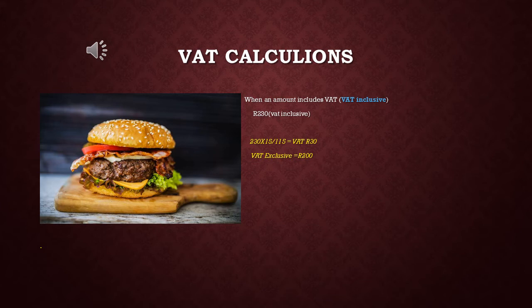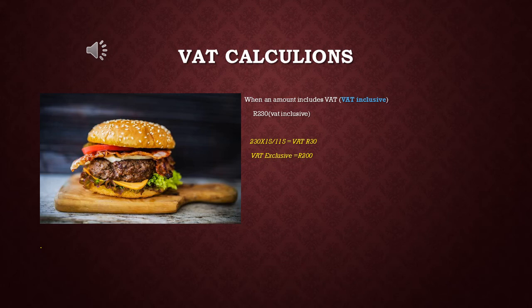Now, this is how you calculate your VAT — this is the most basic calculation. When an amount is inclusive of VAT, meaning the amount already includes VAT in its cost, in this case we have a cost of 230 rands — quite an expensive burger. If you want to find out how much of that amount is going to be paid over to the revenue services, you take the inclusive amount and multiply it by 15 divided by 115, and that gives you the VAT amount charged on that product or service.